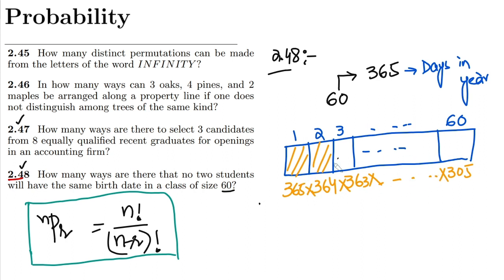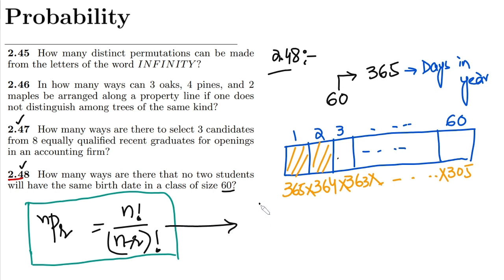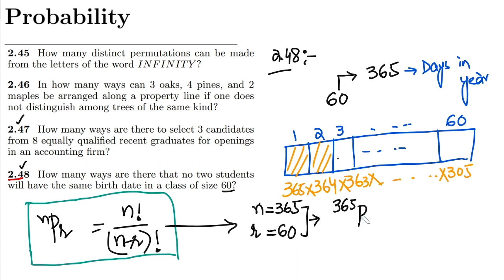It's not very easy to compute this block and multiply them together, so what we do is apply the permutation formula. The total number of options we have are 365 and the number of items we want to take at a time are 60, with no repetition — this is a permutation. Writing it: P(365, 60) equals 365 factorial divided by (365 minus 60) factorial, which is 305 factorial.